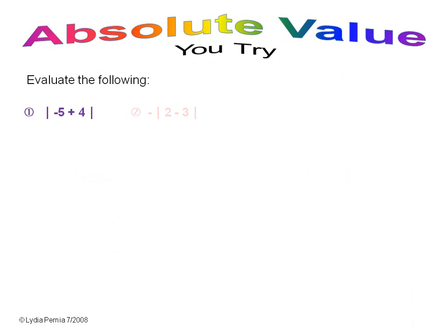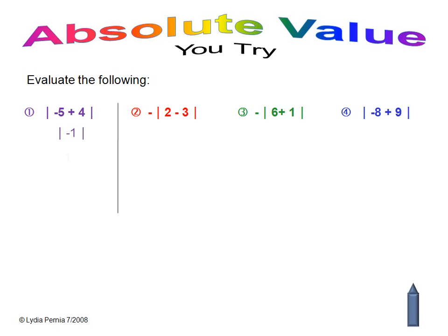Here are some problems for you to try. Remember the rules: do everything inside the bars first, and if there's a negative outside, keep it outside. In this first example, you have to do what's inside. Negative five plus four is negative one. The absolute value of negative one is one, so the absolute value of negative five plus four is one.